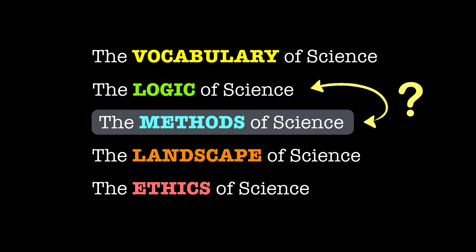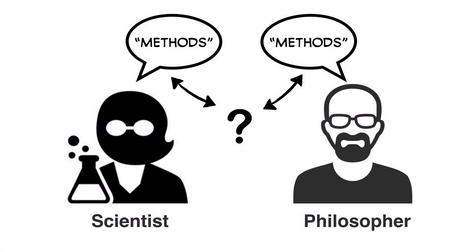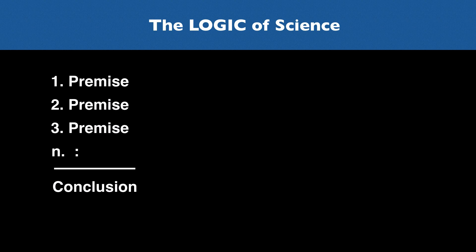So why do we need to distinguish logic and methods? The reason the distinction is important is because the way that philosophers of science talk about the logic of science is often very different from the way that scientists talk about scientific methodology and how scientists are exposed to these questions in their education as scientists. When we talk about the logic of science and explore various models for how this logic works, we're really asking about how different sorts of scientific claims can be rationally justified.